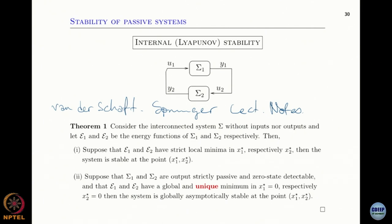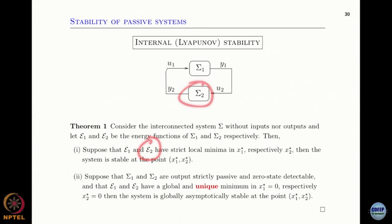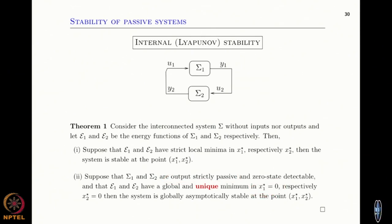Normally when you are trying to control a system to a set point, you would like the equilibrium to be a set point you chose. The only thing left to do is to manipulate the energy of these systems so that the energy functions have minima at the equilibrium you want to stabilize. If in addition you have output strict passivity and the equilibrium is unique, then you will have asymptotic stability.